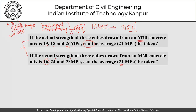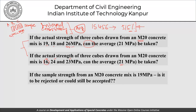The first step for acceptance of hardened concrete is to check that the sample is indeed consistent and worthy of being considered further. If the sample strength from M20 concrete is 19 MPa — say all three cubes give 19 MPa consistently — should this concrete be simply rejected? The average is 19 MPa, and since it is M20, one might think so.